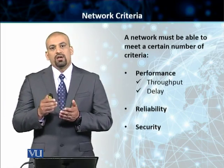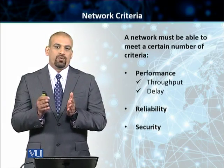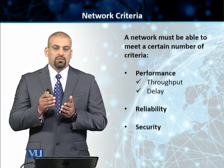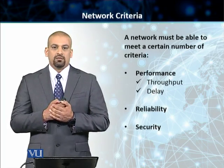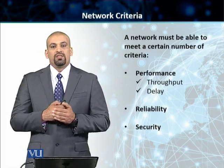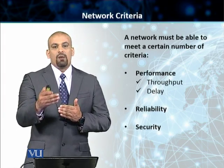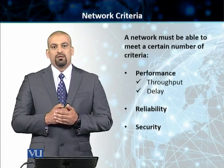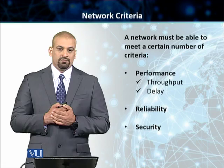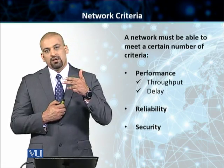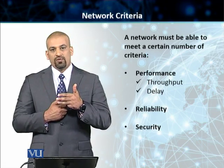The second criteria is reliability. What decides how reliable a network is? The accuracy of the data once it gets from point A to point B decides reliability. The frequency of failures — how many times data fails to reach from A to B — also decides the reliability of that network. So performance, which ultimately depends on throughput and delay, and then the reliability of the network as well.